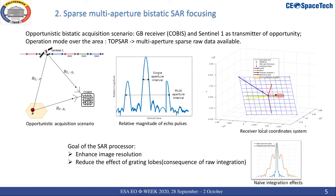The second part of the presentation is about an opportunistic bistatic acquisition scenario which contains a COBIS ground-based receiver and Sentinel-1 as a transmitter of opportunity. Sentinel-1 is operating on TOPSAR mode, thus a multi-aperture sparse raw data is available. For this approach, we want to exploit not only the single aperture interval but this sparse multi-aperture interval in order to enhance the bistatic SAR image resolution and also to reduce the effect of grating lobes, which correspond to a naive integration of the multi-aperture interval.